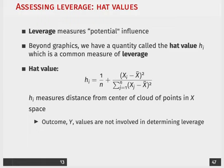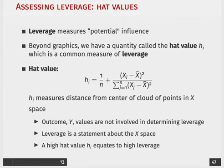This is concentrating on outliers that cut across our multiple dimensions of predictors. Leverage is specifically a statement about an outlier in our X or our covariance space. A higher hat value is going to be equated with higher potential influence or higher leverage. That observation is farther away from the center of cloud points in our covariance space.